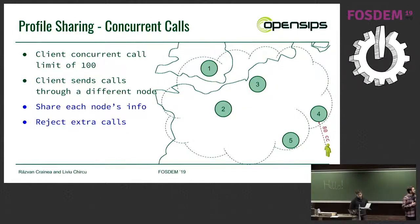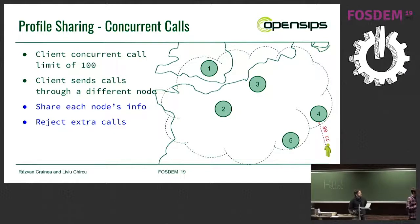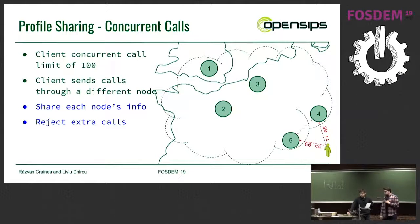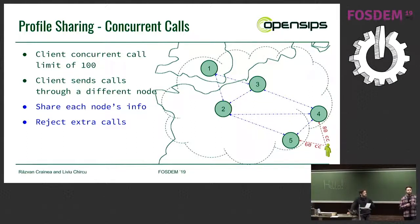Another use case is profile sharing. You might have limits on the concurrent calls a customer is allowed to make. Let's say a customer pays for 100 concurrent call limits and starts sending 80 calls on node four. If he then sends 60 more calls to a different node, he's using 140 channels although he's only allowed 100. So you have to replicate the number of concurrent calls happening on each node, so that when a node receives the extra calls, it rejects them to enforce the limit of 100.